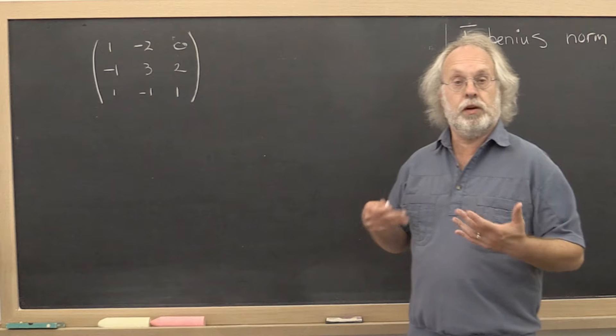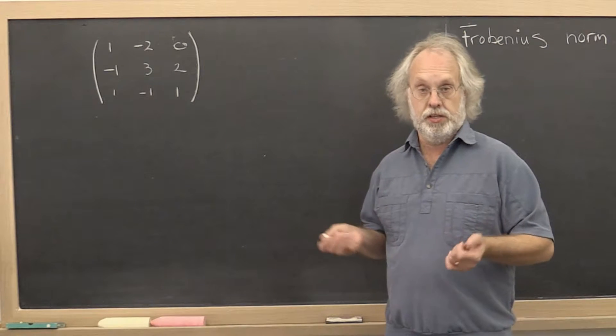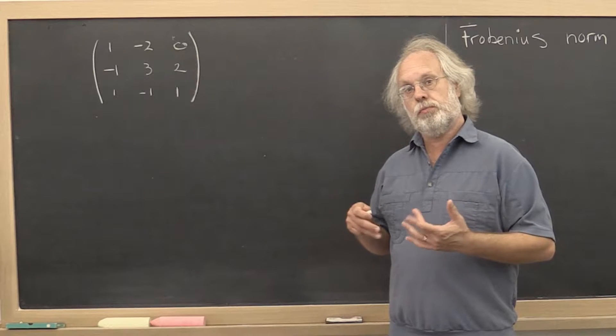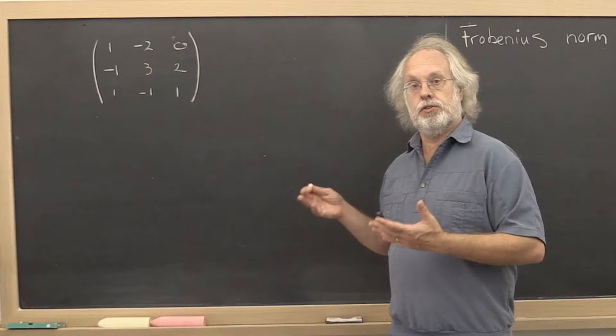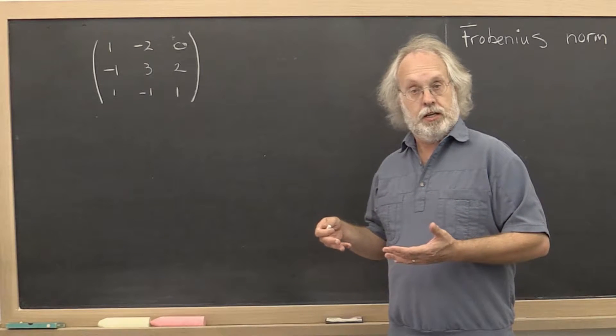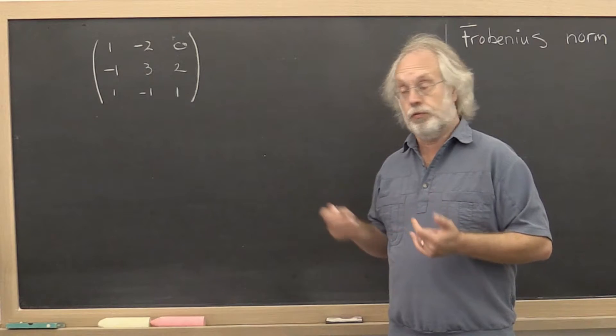We start by talking about one of the simplest norms called the Frobenius norm. Now to motivate it, what I'm going to do is link how matrices are stored in memory to vector norms and then back to the Frobenius norm.